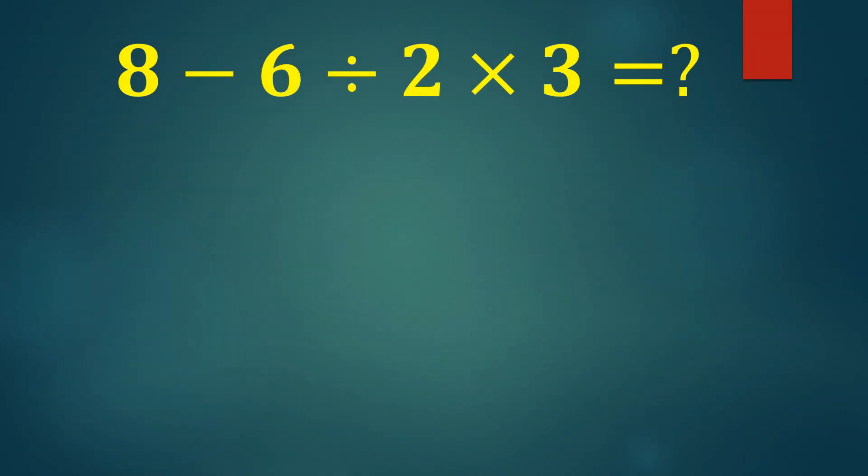Let's try another way. First, we start with the multiplication. 2 times 3 equals 6. Now we have 8 minus 6 divided by 6.